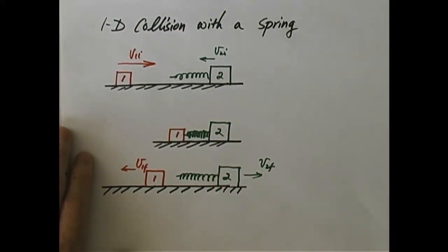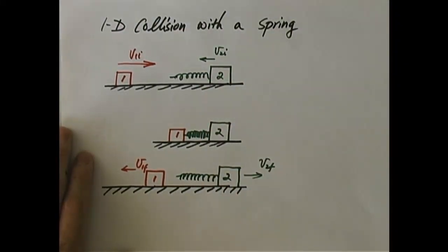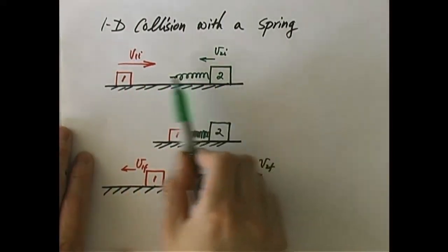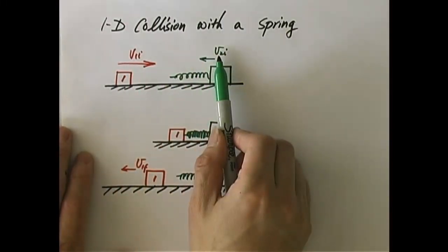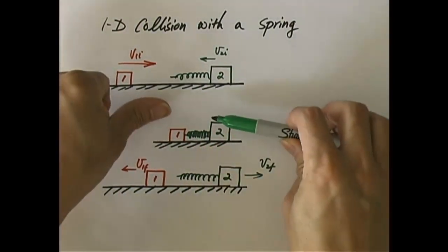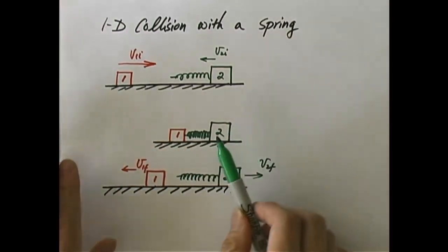What about conservation of energy? Let's be more careful here. We have always talked about conservation of kinetic energy, because we never had something like a spring in between. Now what if you had a spring? This guy comes in. Initially they're moving in opposite directions the way I draw it, so the spring inevitably gets compressed, because one object wants to go this way and the other one wants to go that way.